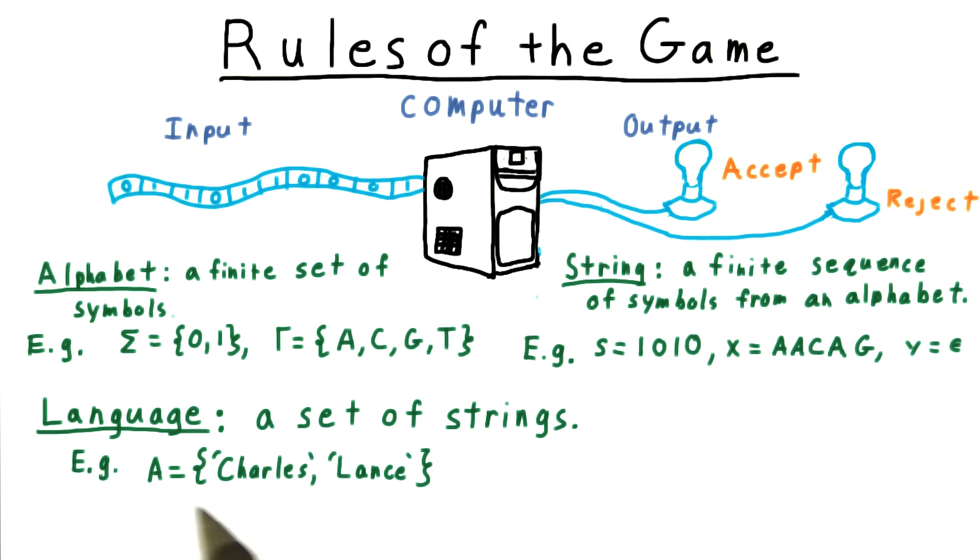For example, a language could be a list of names: Charles, Lance. It could be the set of binary strings that represent even numbers. Notice that this set is infinite. Or it could be the empty set. Any set of strings over an alphabet is a language.